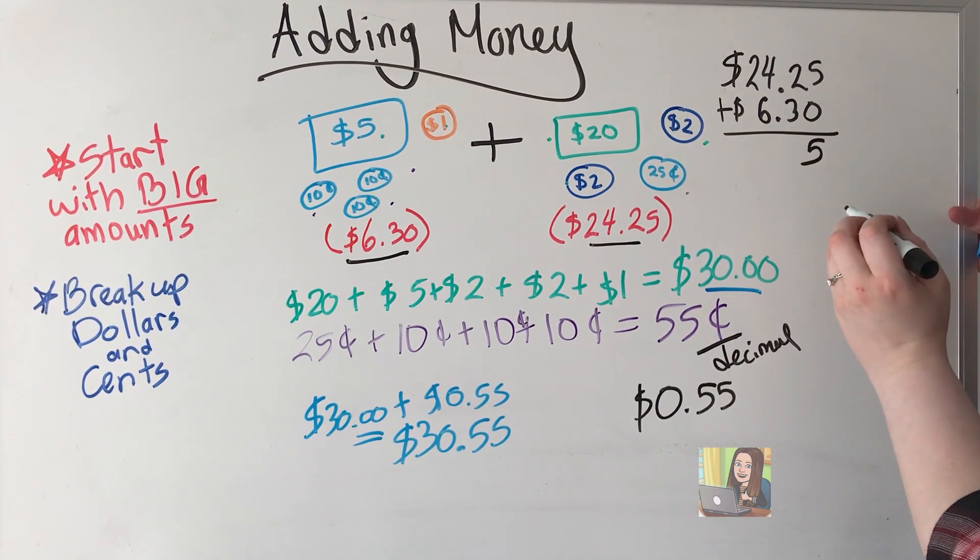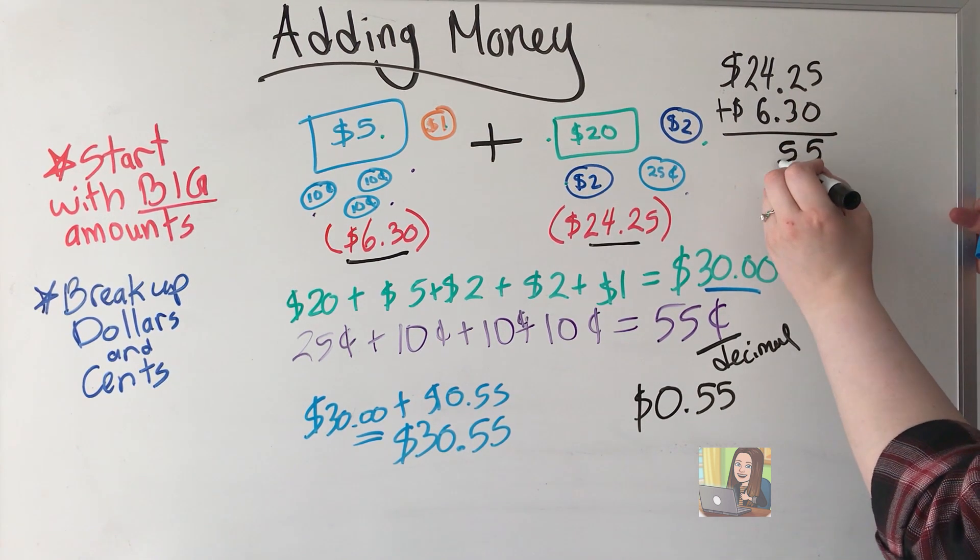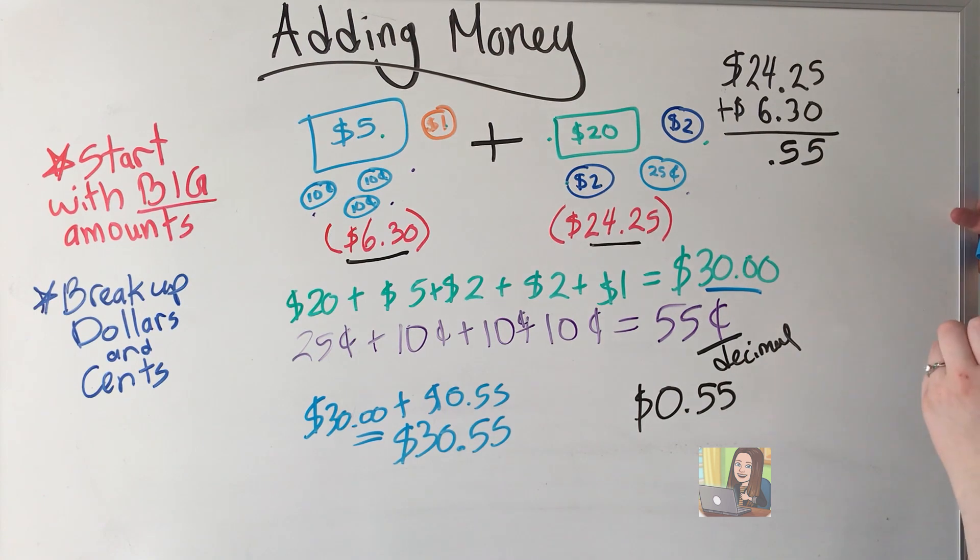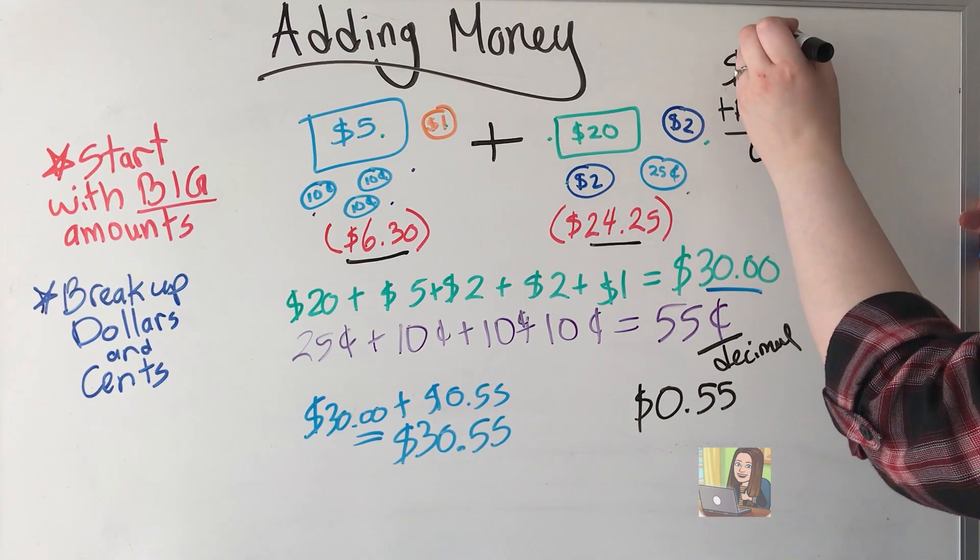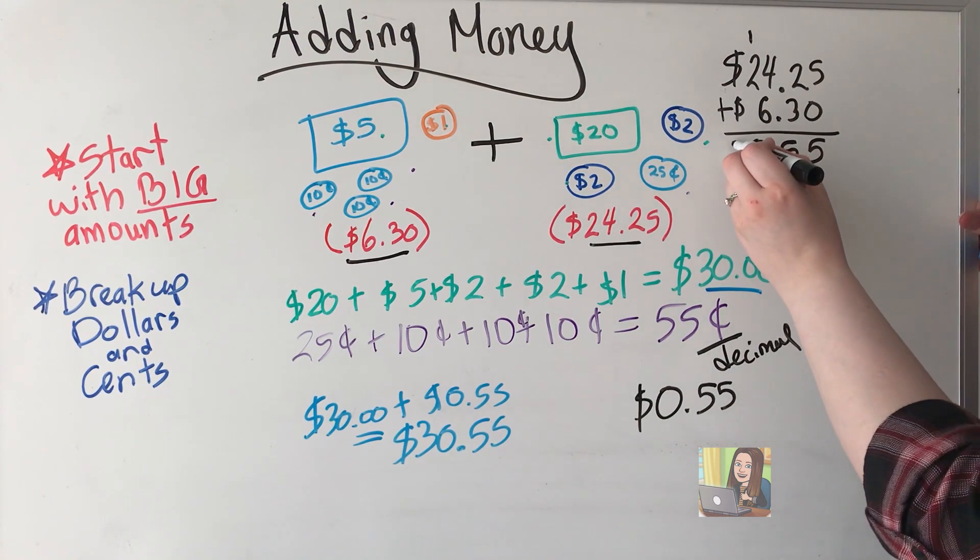5 plus 0 is 5. 3 plus 2 is 5. 4 plus 6 is 10. I drop the 0, put the 1 at top. 2 plus 1 is 3.